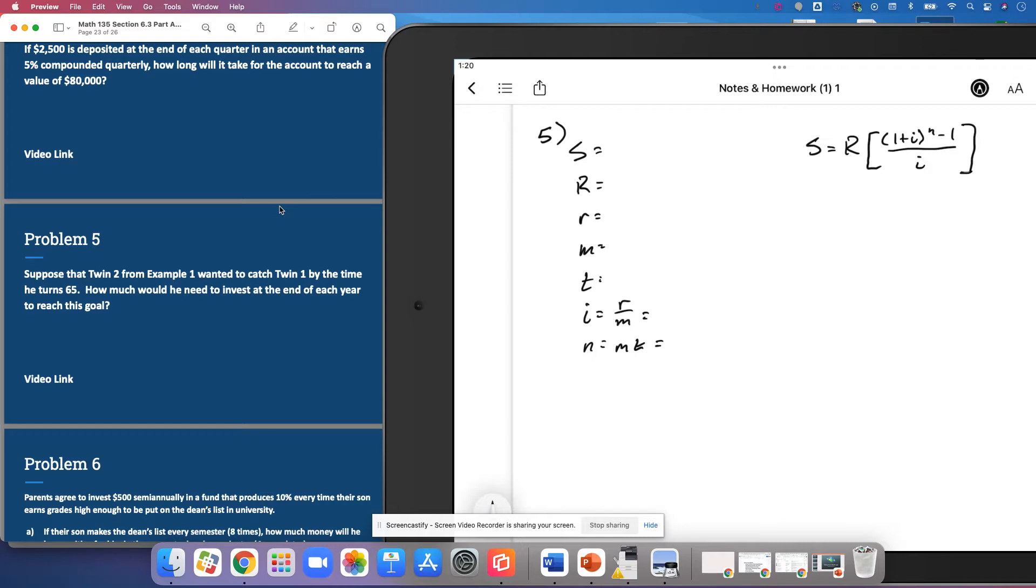And so Twin 1 ended with $642,752.75. And I think I'll add that to this problem for you so you don't have to go digging trying to find it. And the R was what we're trying to figure out. How much does he need to put in?